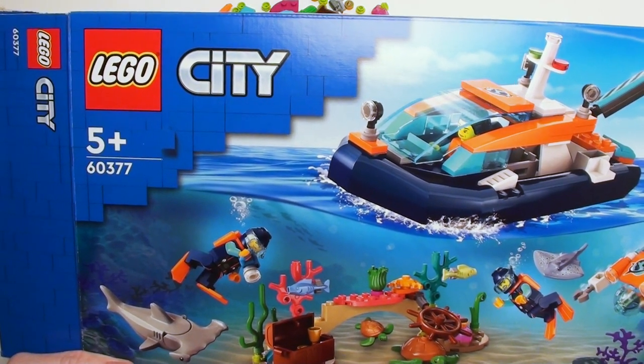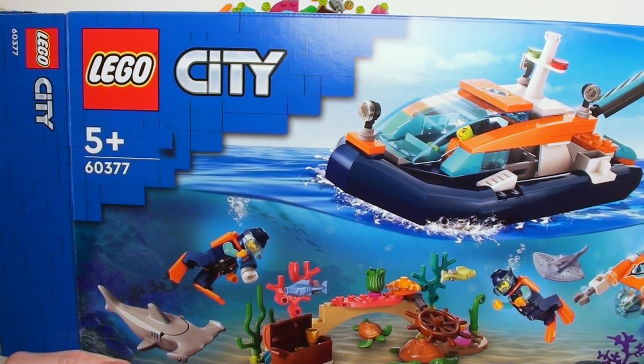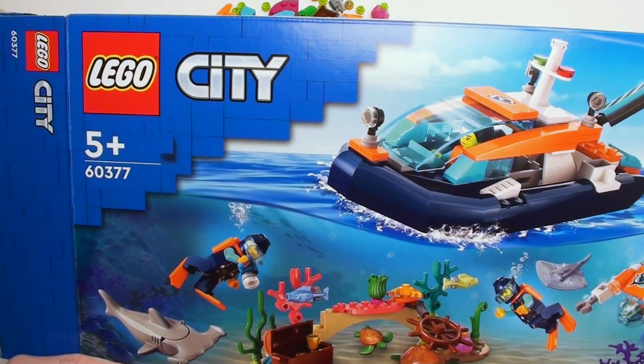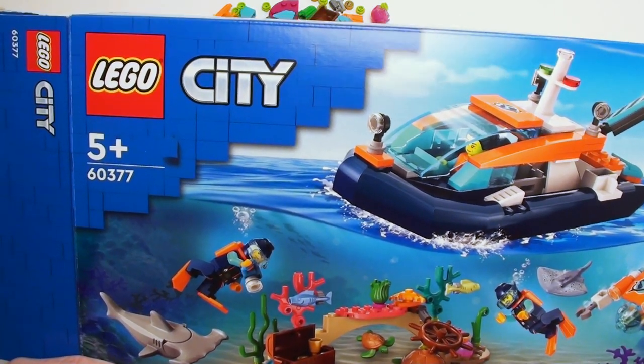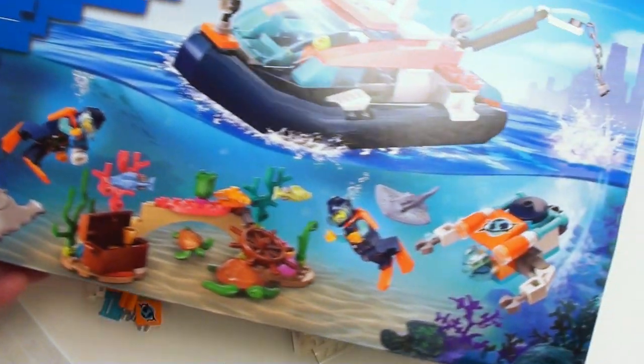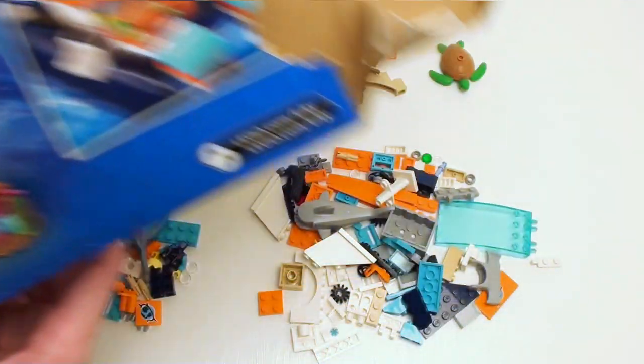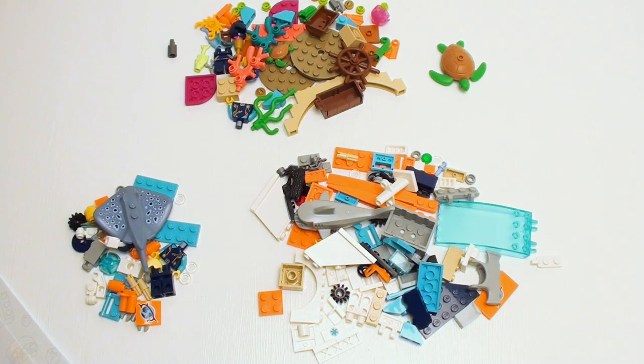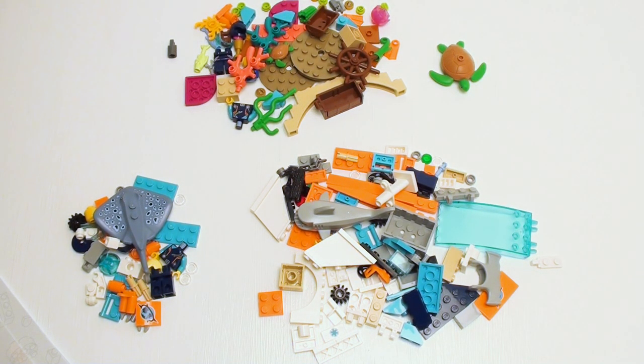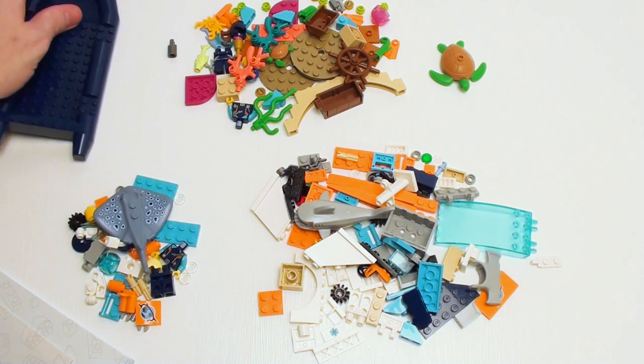Hey guys and gals, let's build the Sea Foresting Boat by LEGO City, set number 60377. This contains 182 bricks, and the set was provided to me by the LEGO Group for early review. This looks pretty fun on the box, and that's what it looks like on the back. I already have everything unboxed because we just did that on the main channel.